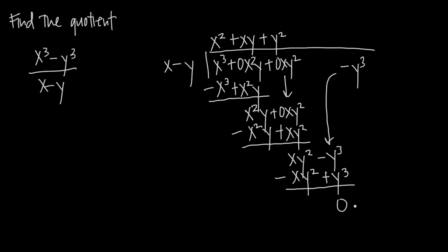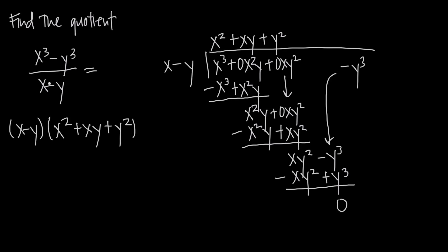We can now say that x cubed minus y cubed divided by x minus y equals the quotient we found: x squared plus xy plus y squared. Remember, if you want to double-check yourself, multiply the quotient by the original divisor or denominator. If you foil this back out and multiply everything, you should get back to your original numerator: x cubed minus y cubed.